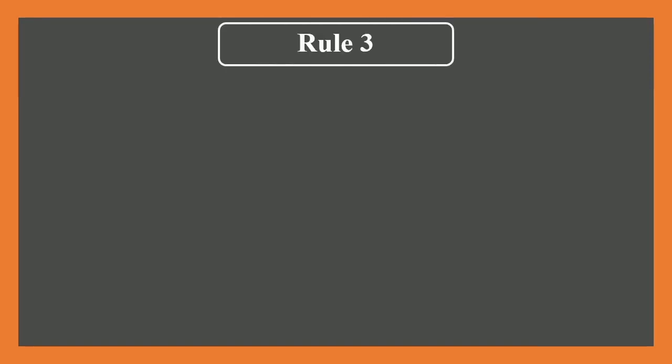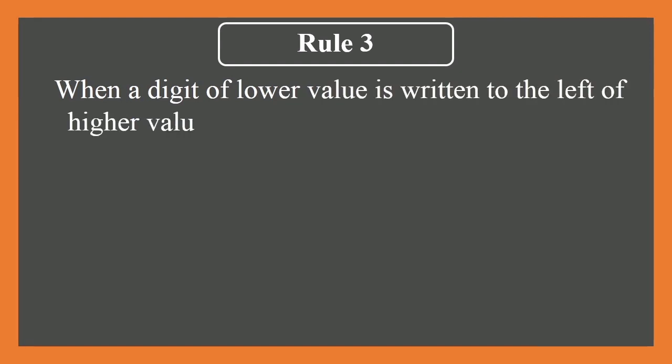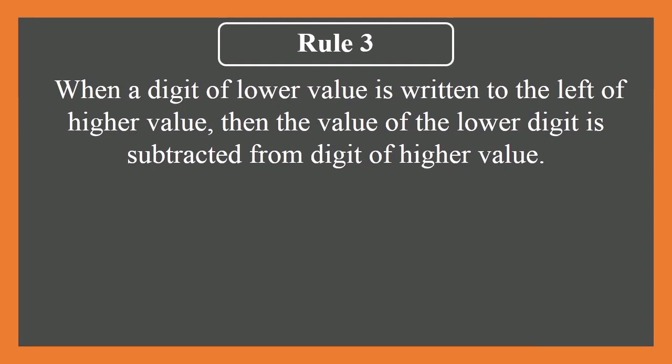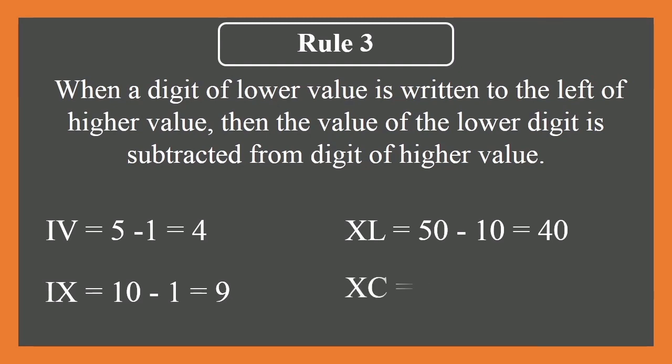Now, when the digit of lower value is written to the left side—in the prior rule we have seen right-hand side, now left-hand side—if it is written, then subtraction. Right-hand side addition, left-hand side subtraction. Let us understand: IV means 5-1=4. IX equals 10-1=9. XL: 50-10=40. XC: C stands for 100, X stands for 10, so 100-10=90. So keep in mind: right side addition, left side subtraction.